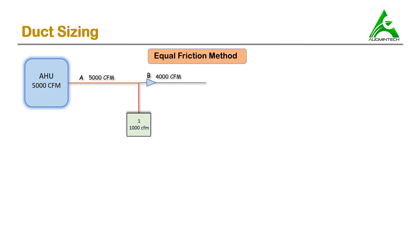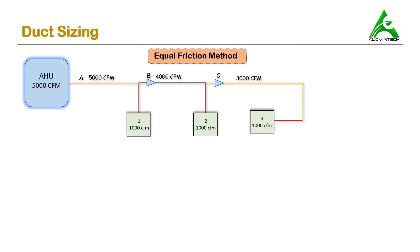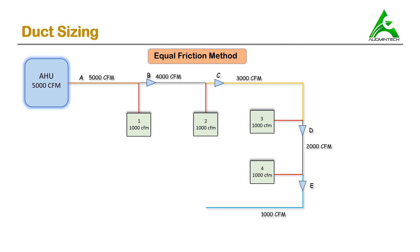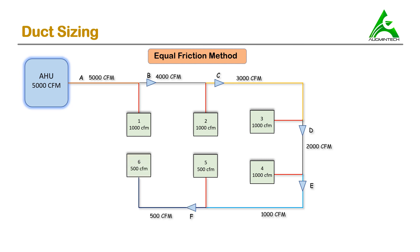The remaining 4000 CFM passes through the reducer to section B of the main duct. From this 4000 CFM, 1000 CFM is taken by diffuser number two, and the remaining air flows through section C. Out of this, 1000 CFM is taken by diffuser three, 1000 CFM by diffuser four, leaving 1000 CFM flowing through section E. From this, 500 CFM goes to diffuser five and the remaining 500 CFM to diffuser six. So there are six diffusers total.